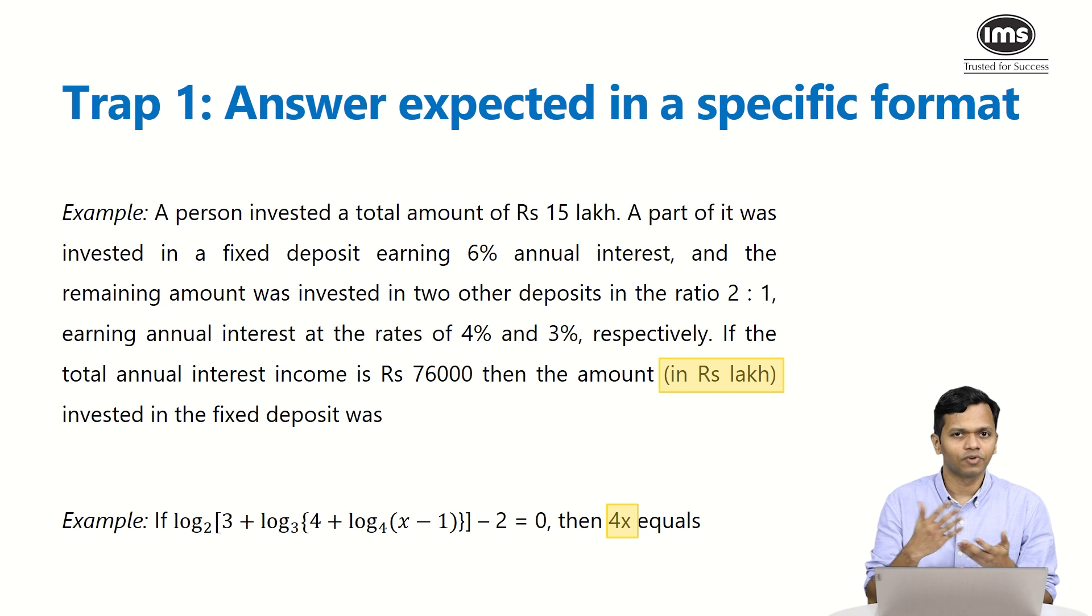The first part is getting invested at 6% annual interest. The second part is further getting divided in the ratio 2:1 and being invested at two different rates, so 4% and 3%. So it's a very simple question that anybody can easily solve. The annual interest income of 76,000 is also given, but the catch in this particular question is the amount in rupees lakh invested in the fixed deposit was.